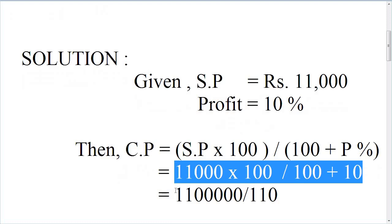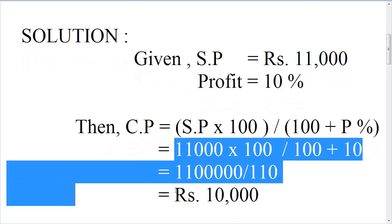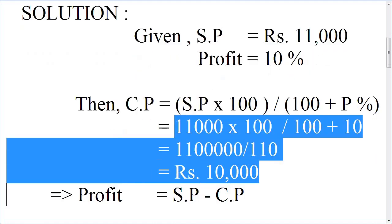So that is 11,000 × 100 divided by 110, which simplifies to 11,000 × 100 divided by 110. The 11,000 and 110 cancel out, giving us a cost price of ₹10,000.